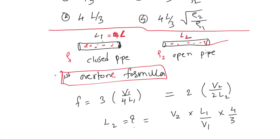For the closed pipe and open pipe, for the first overtone we have a formula. For the closed pipe, the formula is: frequency of the first overtone is given by 3 times V₁ divided by 4L₁, where V₁ is the velocity in this medium. This particular pipe is filled with gas, so the velocity of sound in that particular medium or gas is V₁ divided by 4L₁, where L₁ is the length of that pipe.